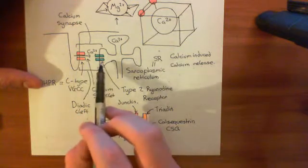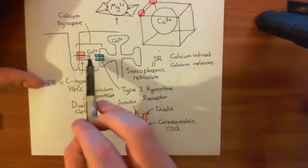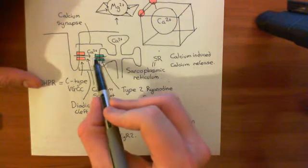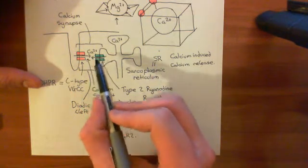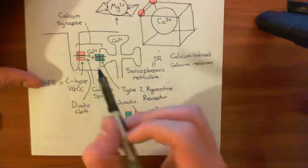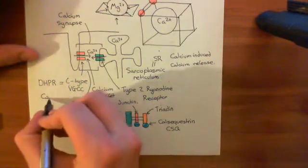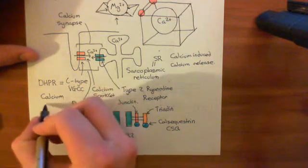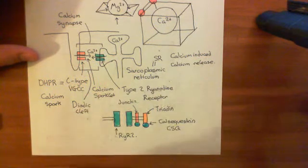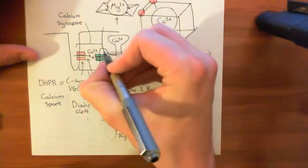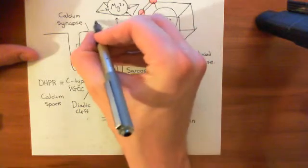When the type 2 ryanodine receptor is activated to open by the calcium that's come in through the L-type voltage-gated calcium channel, it's going to release calcium from the SR lumen into the dyadic cleft. You get a release of calcium from the type 2 ryanodine receptor, and that rise in calcium as a result of release from the SR is what's known as a calcium spark. In addition, you also get a reduction in the level of calcium on the intracellular aspect of this type 2 ryanodine receptor, and the decrease in calcium in the lumen of the SR is what's known as a calcium scrap.